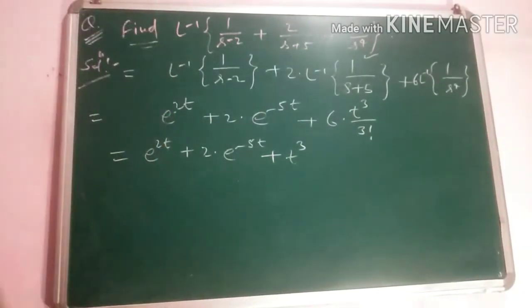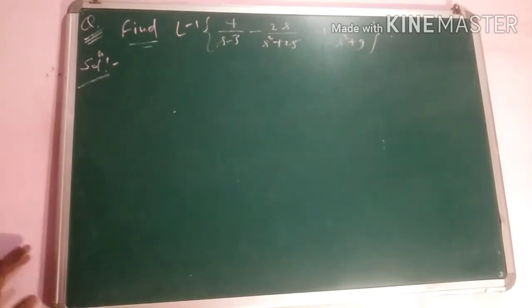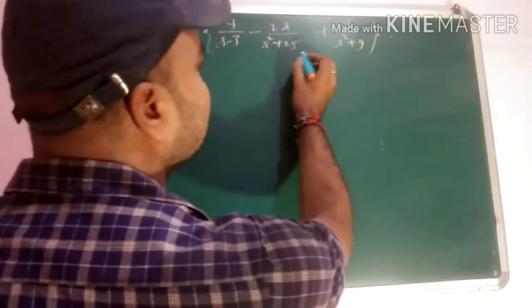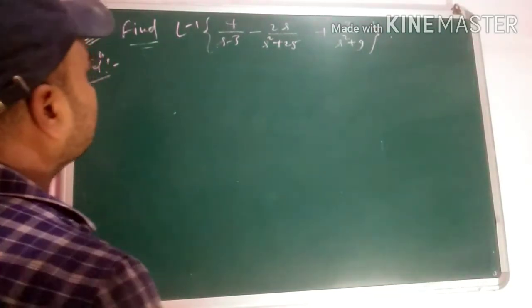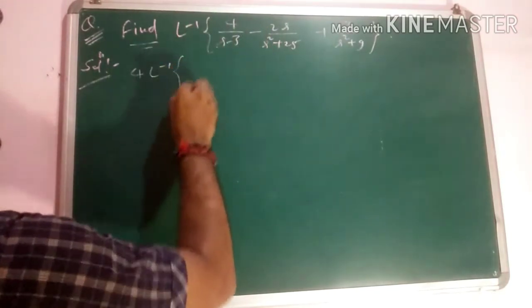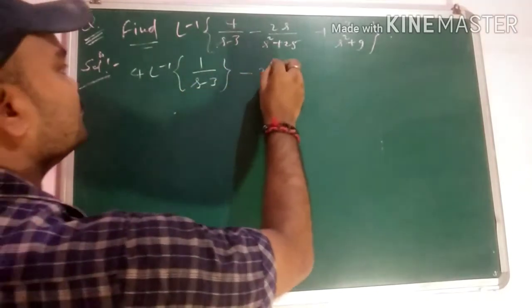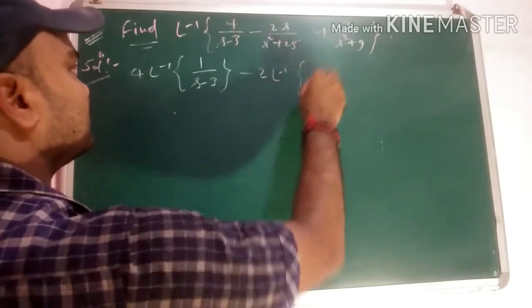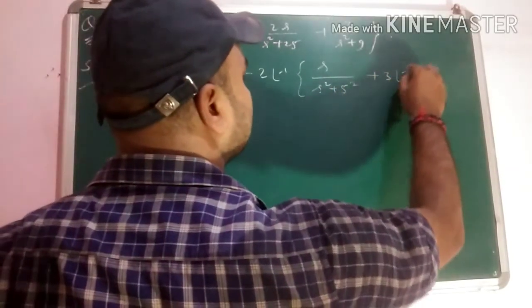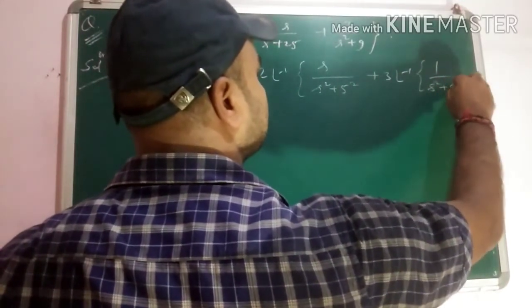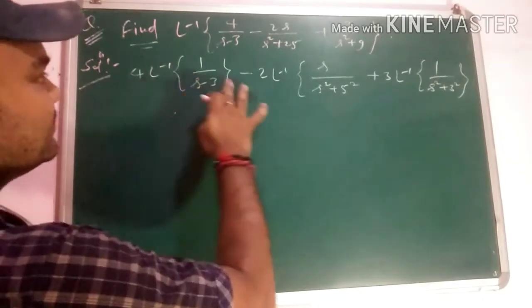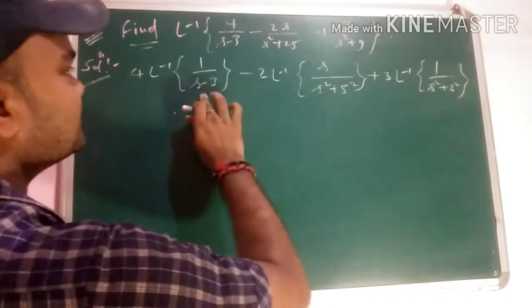Next question: find L inverse of [4/(s(s-3)) - 2s/(s²+25) + 3/(s²+9)]. We will apply linearity property again and write each term separately: 4·L inverse [1/(s-3)] minus 2·L inverse [s/(s²+5²)] plus 3·L inverse [1/(s²+3²)]. Applying linearity property, all terms are now separated.